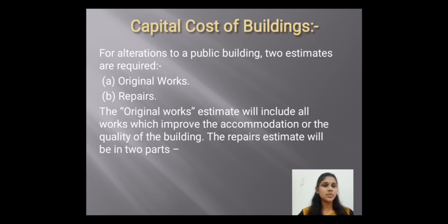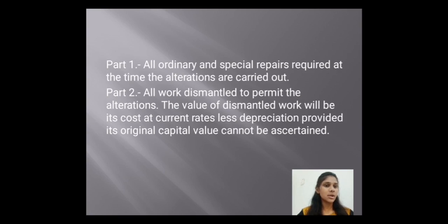For the planning of capital cost of a building and alterations to a public building, two estimates are required: original work and repair. The original work estimate includes work which improves the accommodation or qualities of the building. The repair estimate has two parts: the first part includes all ordinary and special repairs required at the time the alteration is carried out, and the second part includes all work displaced to permit the alteration. The value of the dismantled work will be its cost at current rates, unless the depreciation or the original capital value cannot be ascertained.